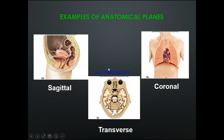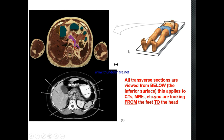All transverse sections are viewed from below the inferior surface — this applies to CTs, MRIs, etc. You're looking from the feet toward the head. When looking at these cross-sections, whether through a cadaveric specimen or in imaging, you are looking at the structures from the foot end upward.